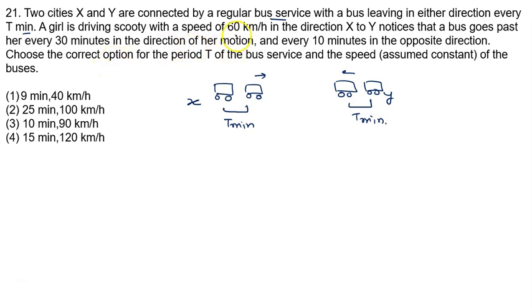A girl is driving a scooter with a speed of 60 km per hour in the direction X to Y. This girl is moving from X to Y with the speed given to you, 60 km per hour. Notice that the bus goes past her every 30 minutes in the direction of motion. Buses pass her every 30 minutes. Choose the correct option for the period T of the bus service and the speed of the buses.